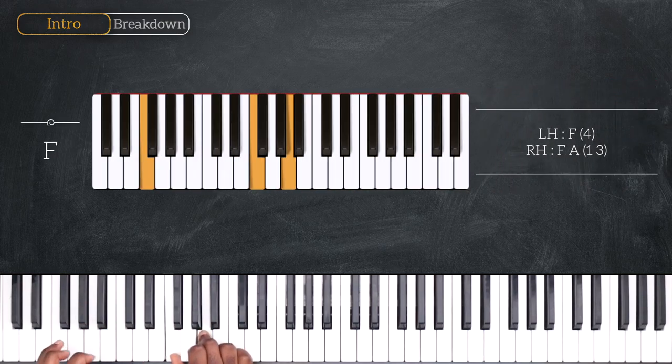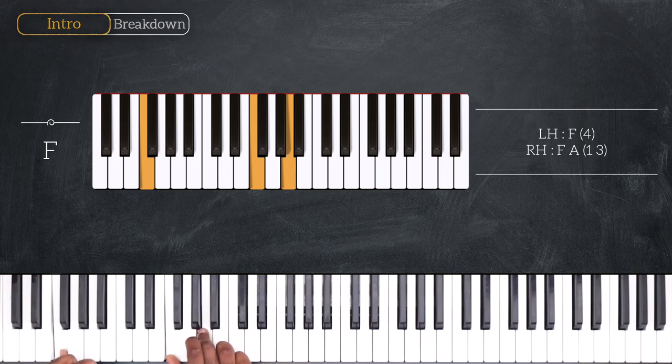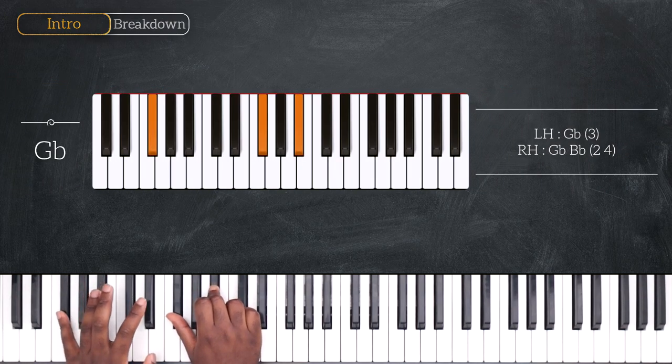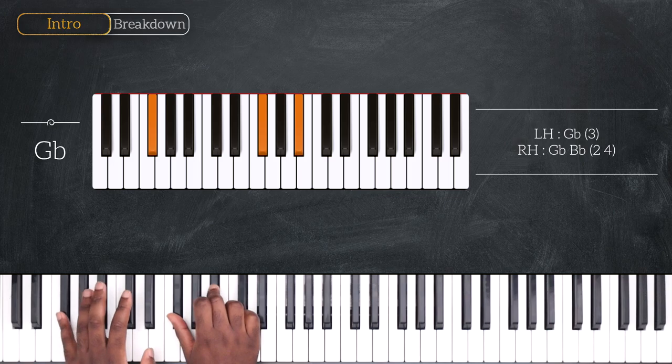So, I have F on my left, with F and A right hand. Then I'm going to move up by one half step and play Gb. Gb, Gb, Bb.